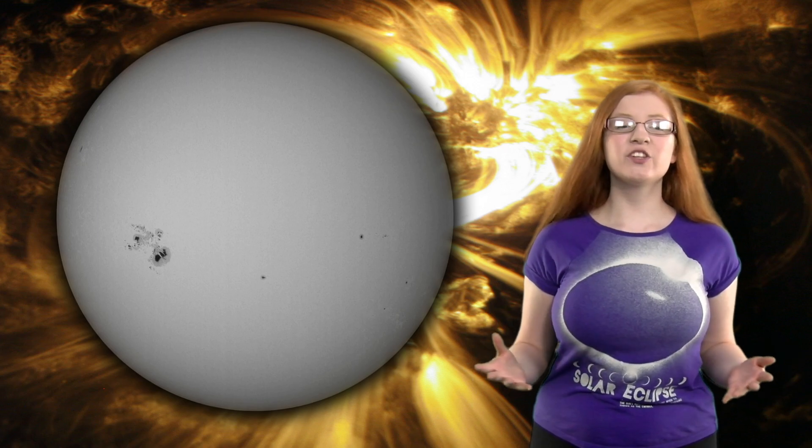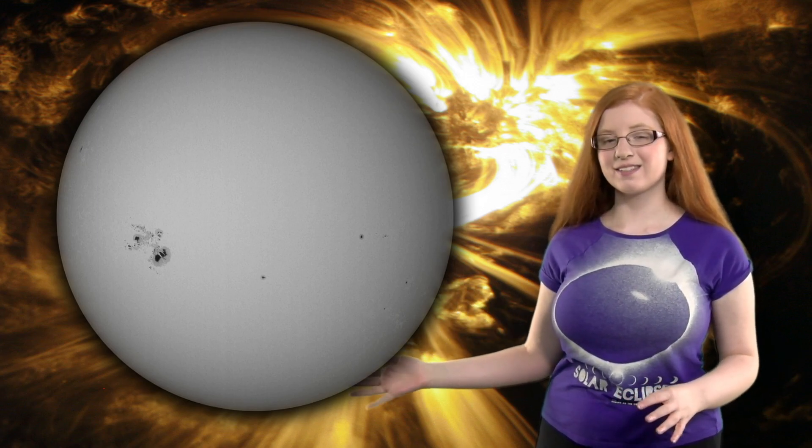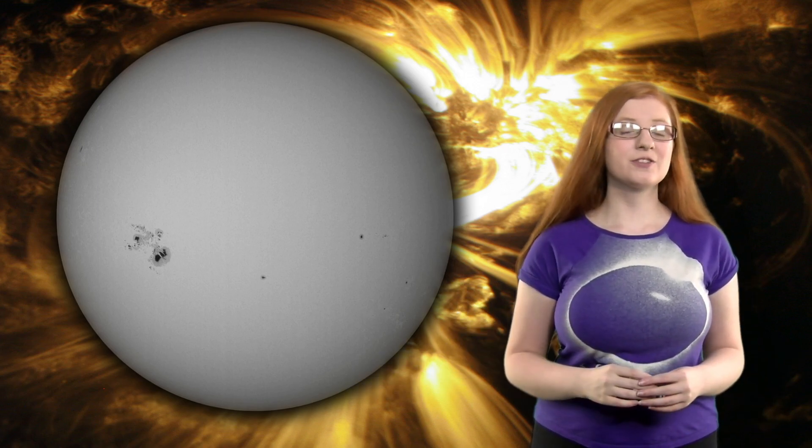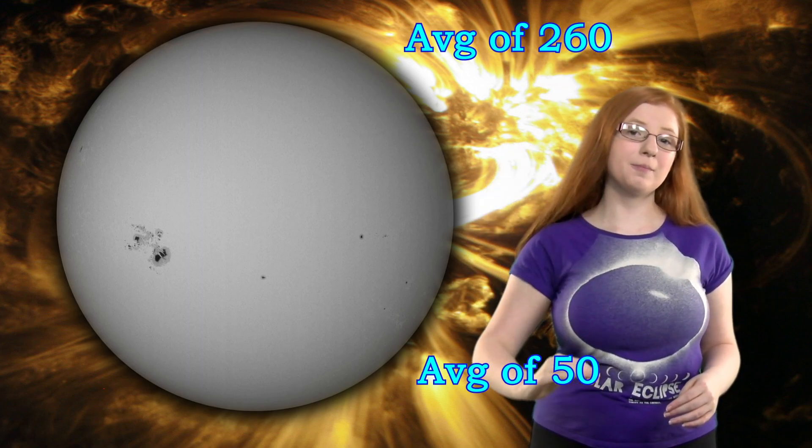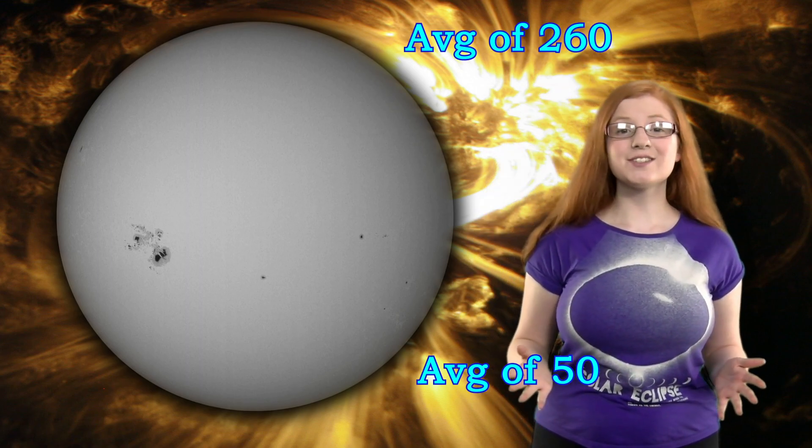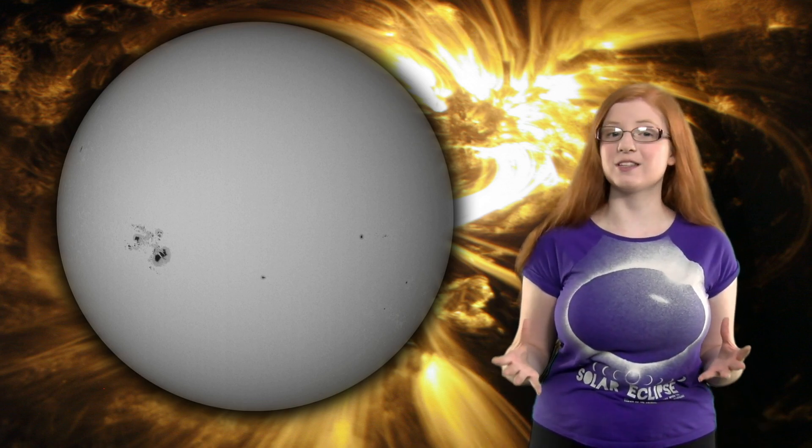Our sun goes through a magnetic cycle that we've observed by looking at the sunspots. Specifically, they look at the number of sunspots. Every 11 years the sunspots alternate between the maximum number and the minimum number on the surface, thus having a total cycle of 22 years, and sunspots occur closer to the equator.